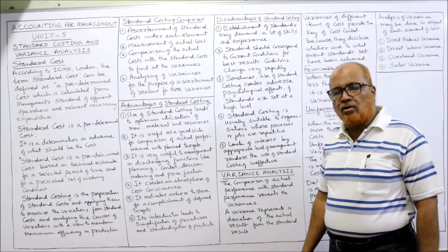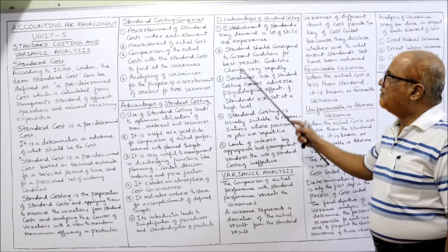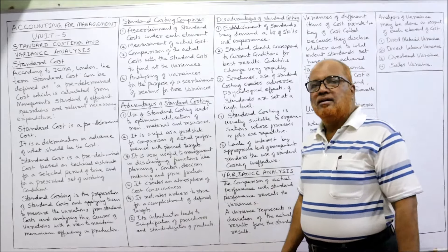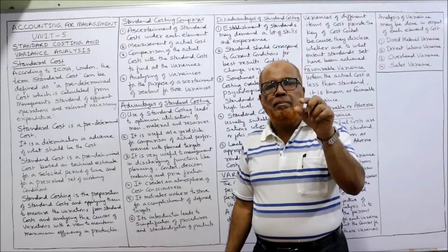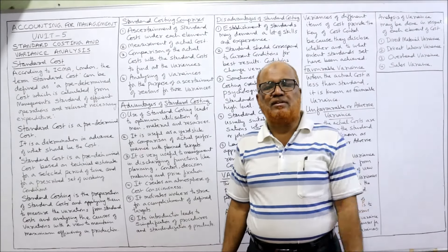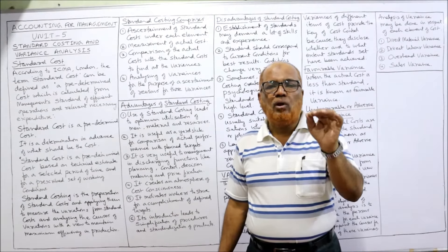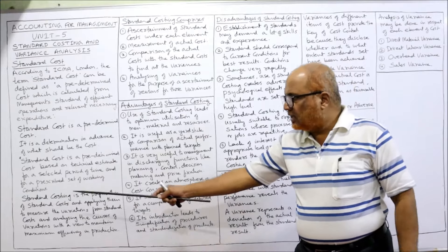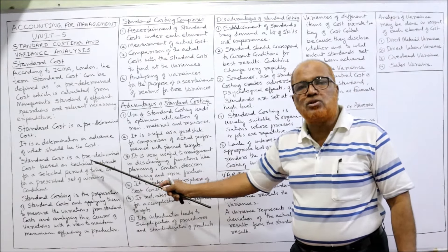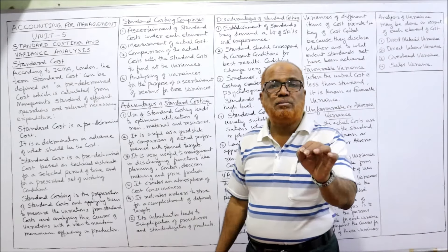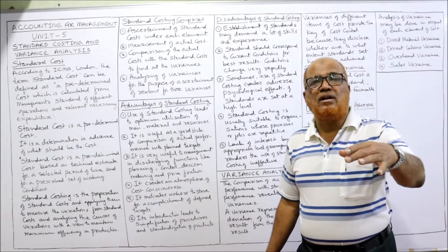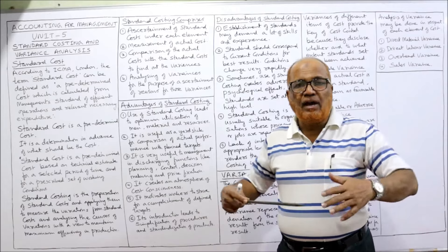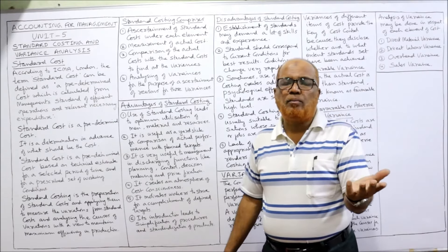Now moving on to disadvantages of standard costing. The first disadvantage: establishment of standards may demand a lot of skill and experience. Standard cost cannot be arbitrarily or roughly fixed — it requires a lot of skill, experience, and judgment. That is why standard cost is a predetermined cost based on technical knowledge and technical estimate, for a prescribed set of conditions and for a specified period of time. If we arbitrarily fix the standard cost, we will not be able to achieve it.